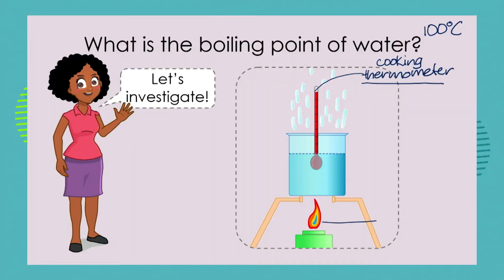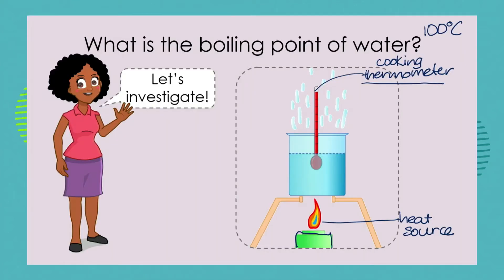So what would you need to investigate the boiling point of water? We would need a heat source. The diagram I'm showing you here shows a little gas burner or candle burner that might be present in a laboratory at school, but you can use a stove or gas burner at home. We need a little stand to put our pot or beaker on. In the laboratory we would use a glass beaker, but you can use any pot. And of course, we're going to use a special cooking thermometer able to record temperatures in excess of 100 degrees C.